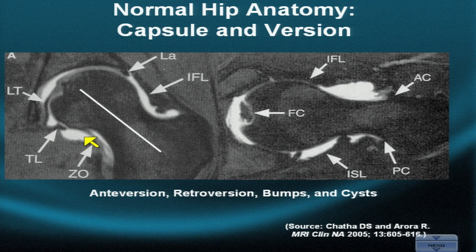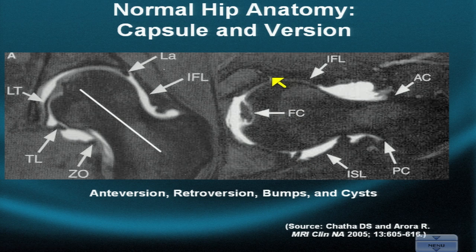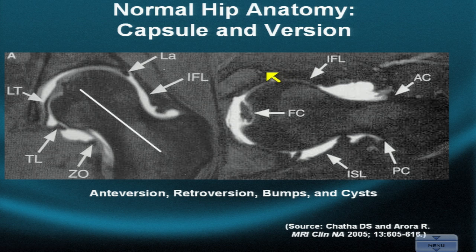In the condition of anteversion, the posterior acetabular labrum should line up with the center of the femoral head. If it protrudes too far laterally, there is posterior over-coverage and the patient is said to suffer from anteversion. Conversely, the anterior acetabular labrum should always be medial to the posterior labrum. If it is too large and protrudes beyond the position of the posterior labrum to the viewer's right, the patient suffers from retroversion.